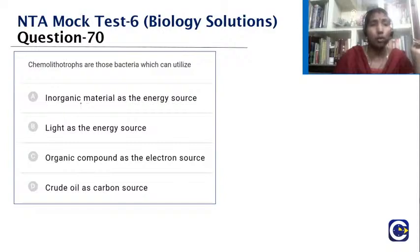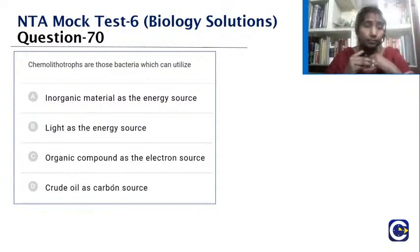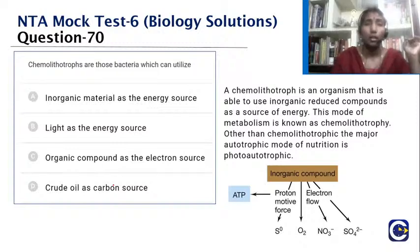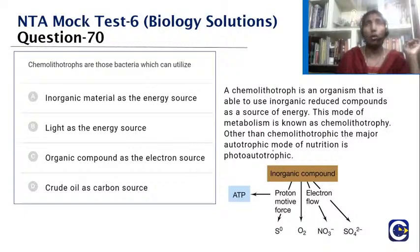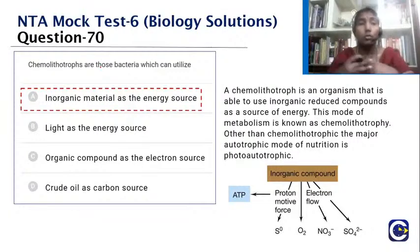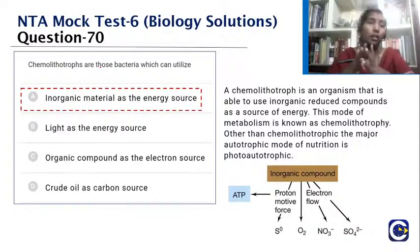Chemolithotrophs are bacteria that utilize inorganic reduced compounds as the energy source. The word 'litho' indicates it uses chemicals that are not organic but inorganic. This mode of metabolism is called chemolithotrophy. Apart from chemolithotrophy, the other autotrophic mode is phototrophic nutrition using light. The answer is inorganic material as the energy source.